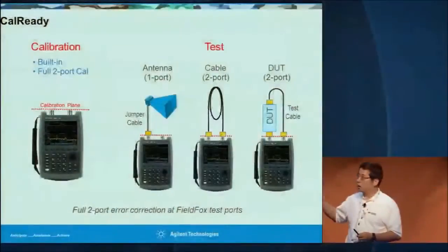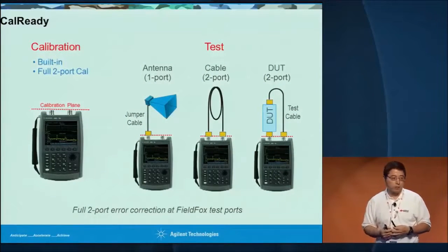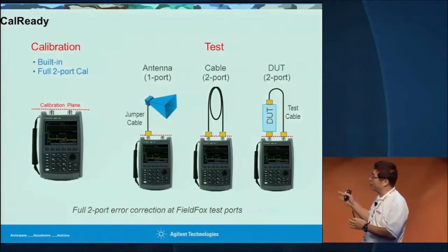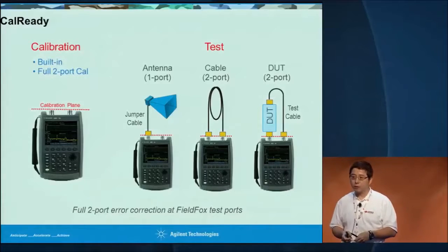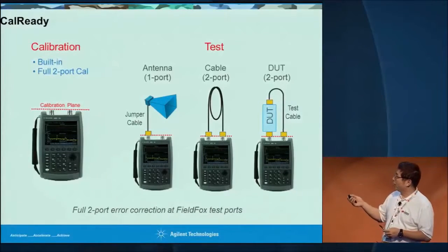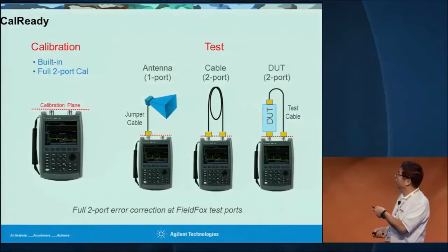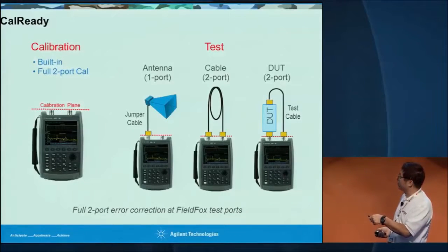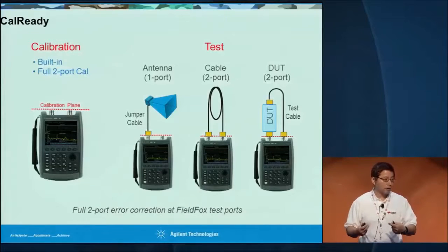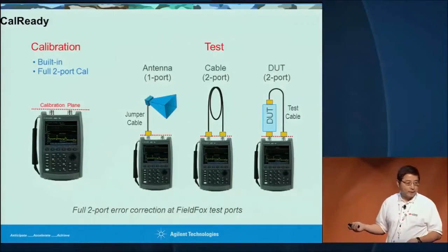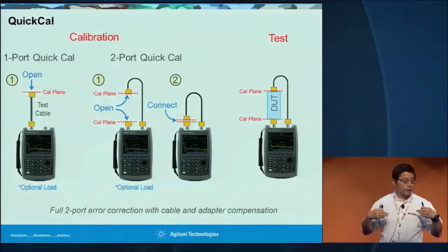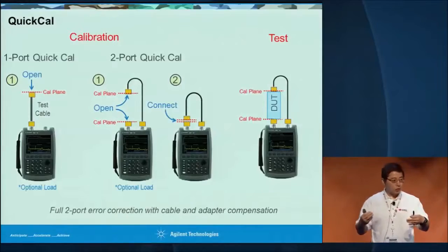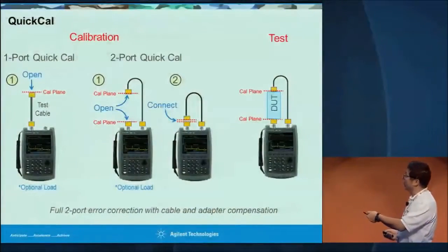One of the features inside the Agilent FieldFox — we have a demo over there — is that you turn it on and it's calibrated at the end of the port. This helps customers get to the task very quickly rather than performing open, short, load calibration manually. You can immediately make one-port or two-port measurements. We also have a technique called QuickCal, with two ECAL modules built inside the box. It measures the loss of the jumper cable and adapter, including phase shift, and automatically extends calibration to the end of the cable.